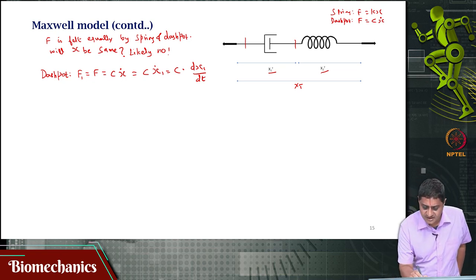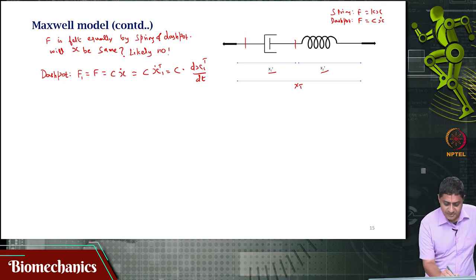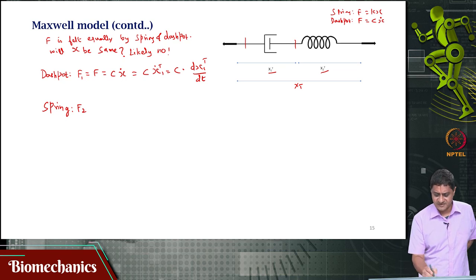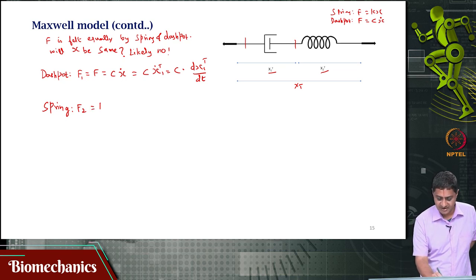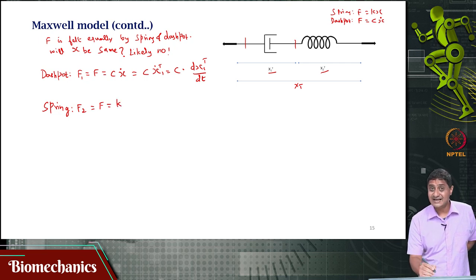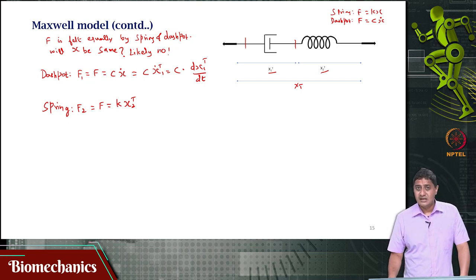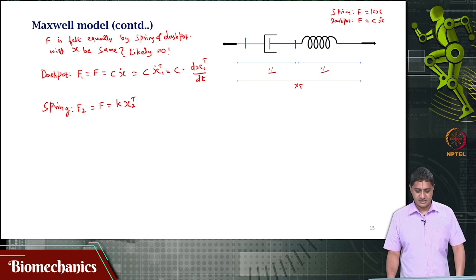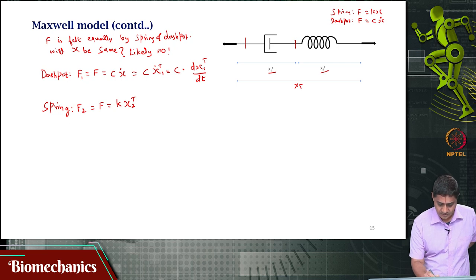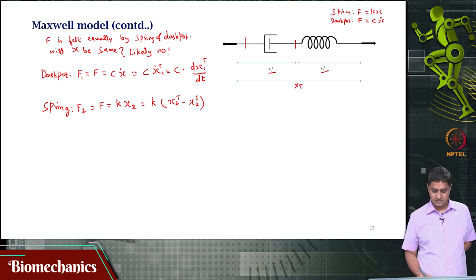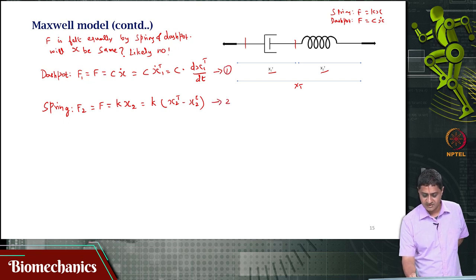For the spring, I will call the force f₂, which is also f since the force is felt equally by both. So f₂ = k·x₂(t). For a spring, that deformation is change from its equilibrium or resting length, so f = k times the current deformation minus the equilibrium position. I will call this equation 1 for the dashpot and equation 2 for the spring. The total deformation x_total(t) = x₁(t) + x₂(t).